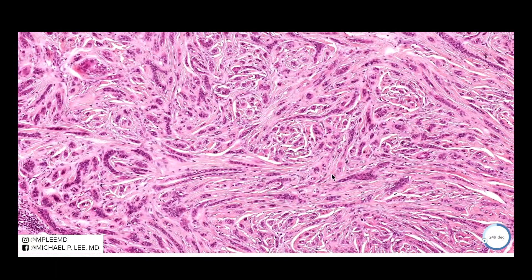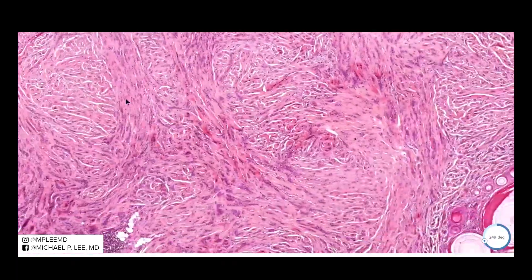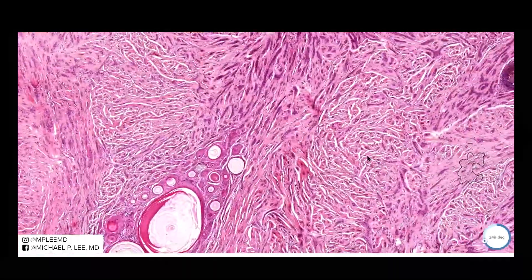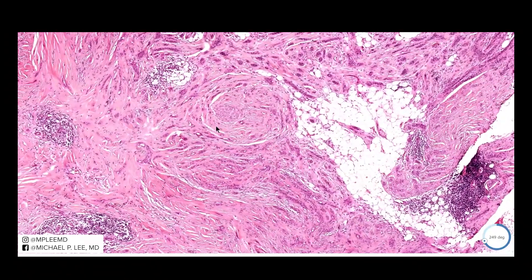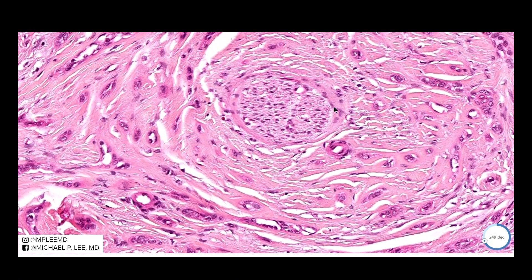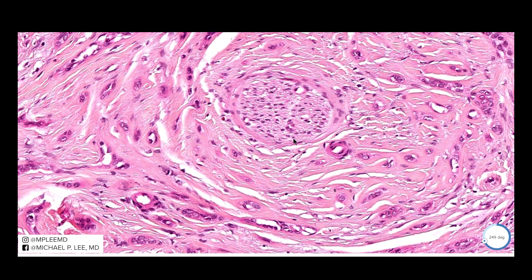I think there was another focus of possible perineural invasion here. You can see this is a peripheral nerve, and there are a couple of structures in here that are quite suspicious. I'm not positive about this, but you can throw a stain on it and easily tell if that is indeed perineural invasion.